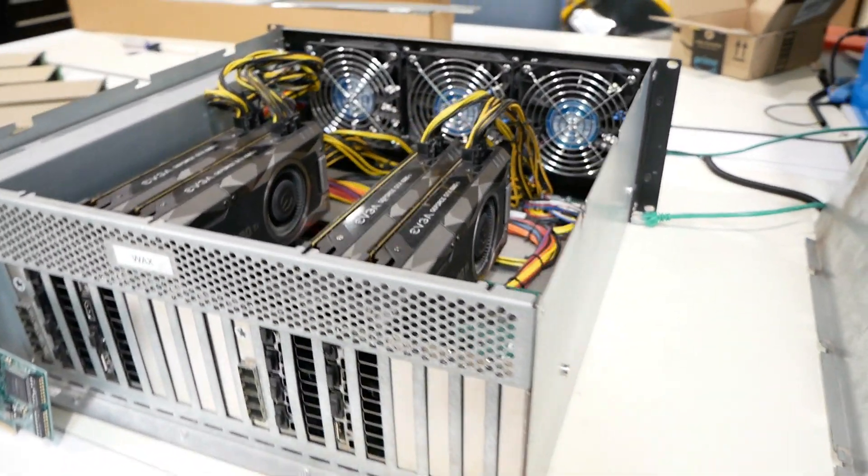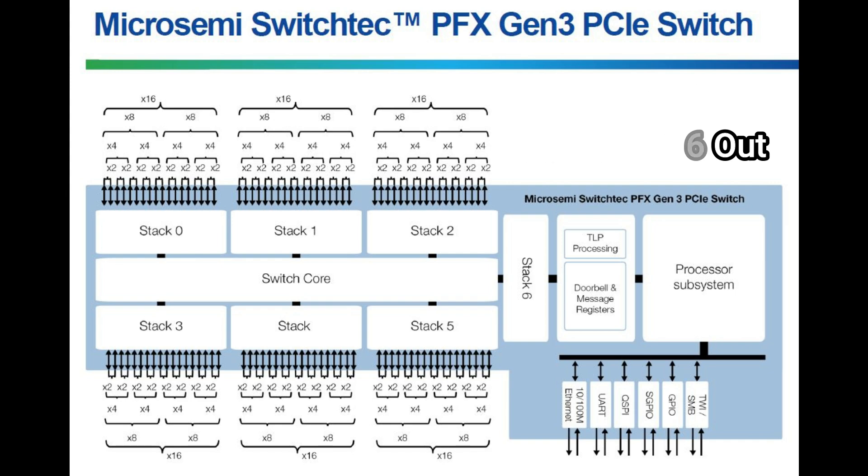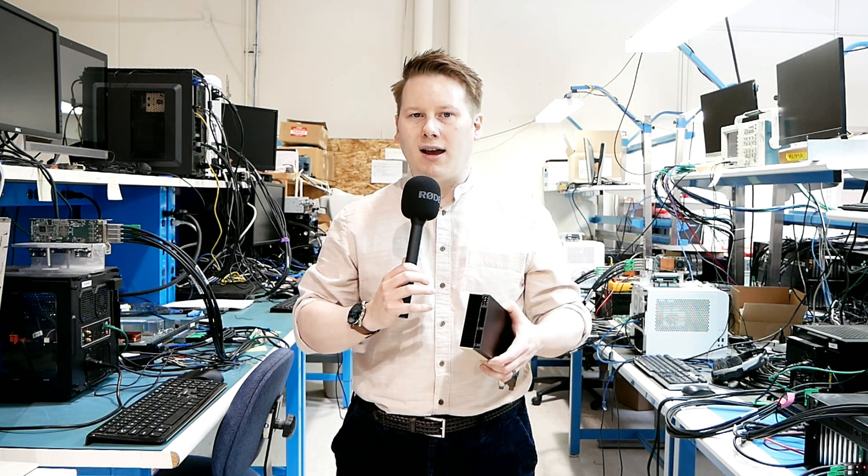What if you could extend PCIe? We already have this — you may have heard of PCIe switches before. You have one PCIe switch connected to a CPU, it takes in eight or 16 lanes, and you could expand that out into 16, 32, or even 64 lanes, and gain access to more devices through that. Therefore, you can have one host, one CPU that has 128 lanes.